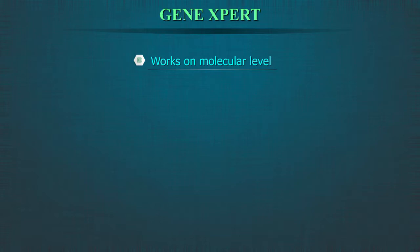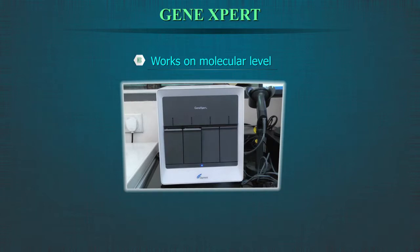This means that it does not use microscopy but a kind of chemical test to look for the TB bacterium. The GeneXpert is a small machine about the size of a microwave oven that can fit easily on a small table. The test is also called the Xpert MTB/RIF, for Mycobacterium tuberculosis and rifampicin.